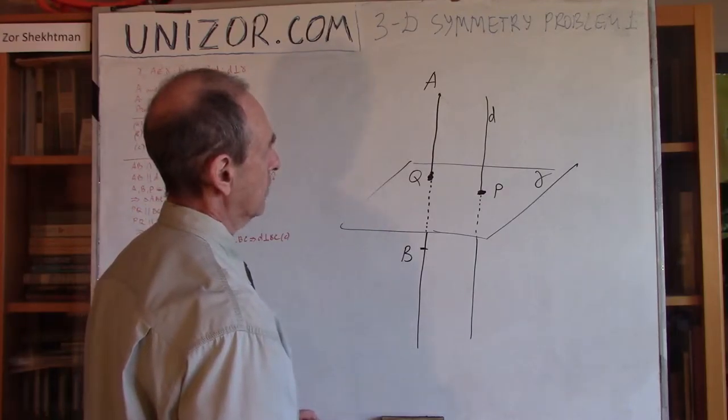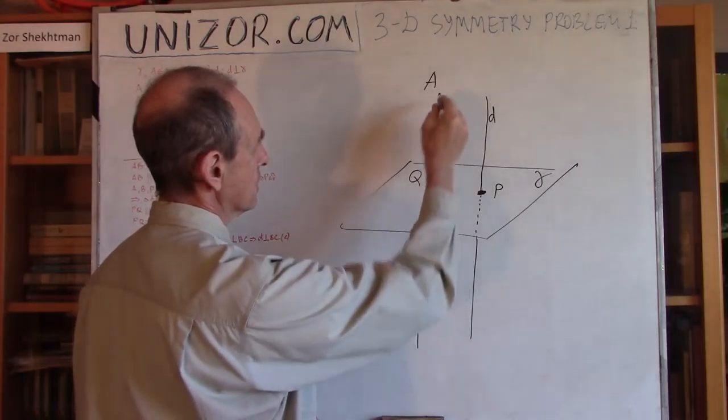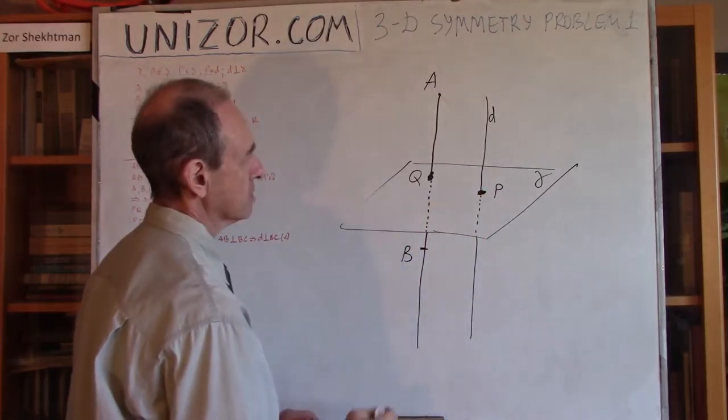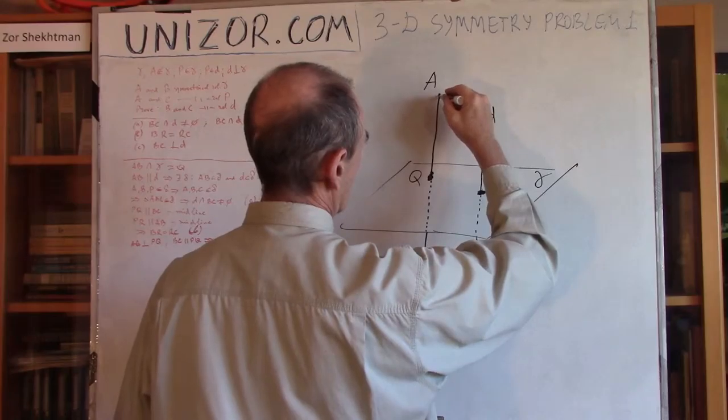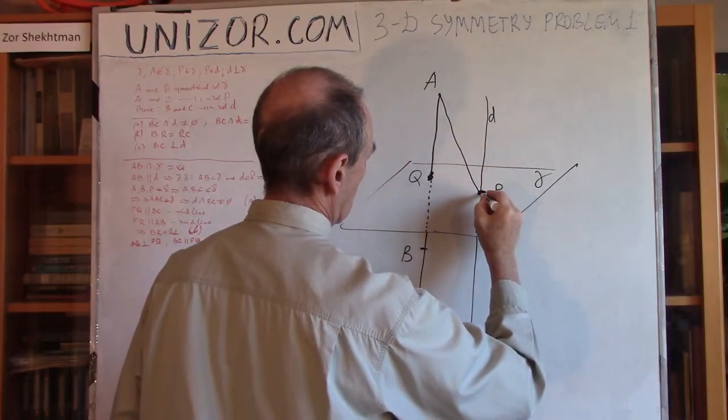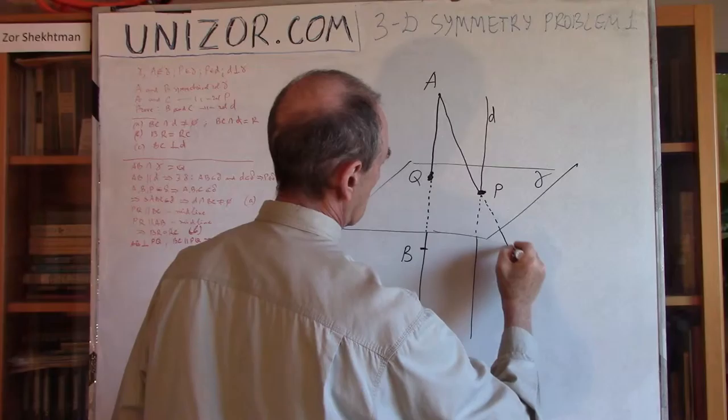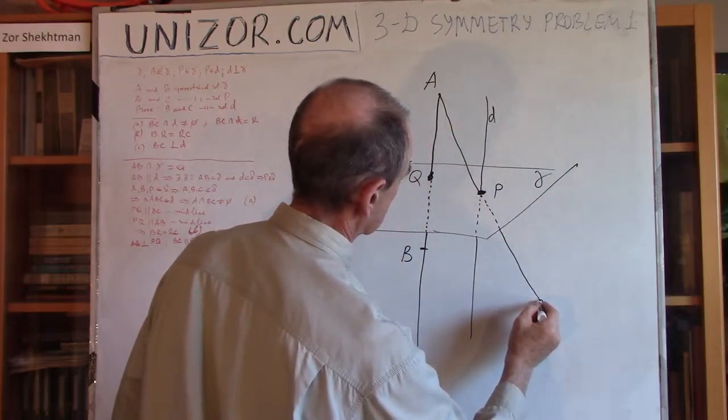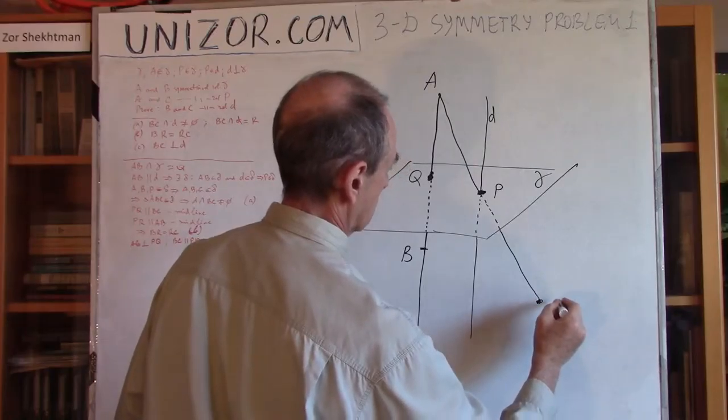At the same time, I would like to make a reflection of point A relative to point P, so it's a centrally symmetrical thing, which means I have to connect them and continue by the same distance. Let's call it C.